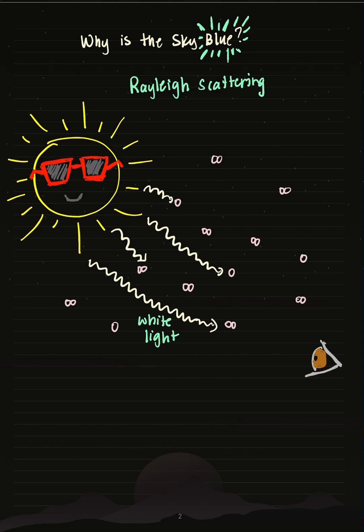White light is composed of all the colors of the rainbow: red, orange, yellow, green, blue, and violet.